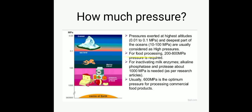Now, how much pressure do we need? Generally, the pressures which are exerted at high altitudes and the deepest part of oceans, which are in the range of 0.01 to 100 MPa, are considered as high. But when we consider food processing, the pressure which we are using are as high as 200 to 800 MPa, and even for inactivating milk enzymes, the pressure may exceed to 1000 MPa. But usually, 600 MPa is considered optimum for processing of commercial food products.